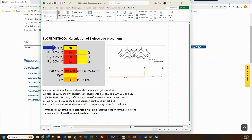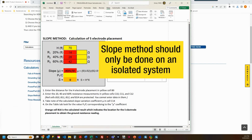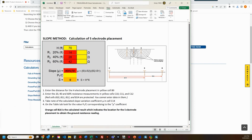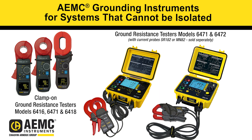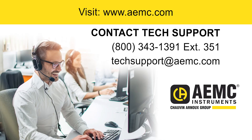Enter the distance to H to establish the three measurement positions. A quick note before proceeding: like fall of potential, the slope method should only be done on an isolated system. Other bonded electrodes, like those connected via utility neutral, will influence the measurement and invalidate the results. Be sure that you isolate your system before performing testing. AEMC also has testing instrument solutions for systems that can't be isolated — contact technical support or your nearby AEMC sales engineer or distributor for details.